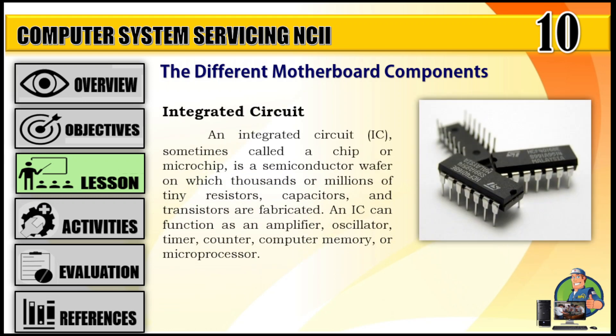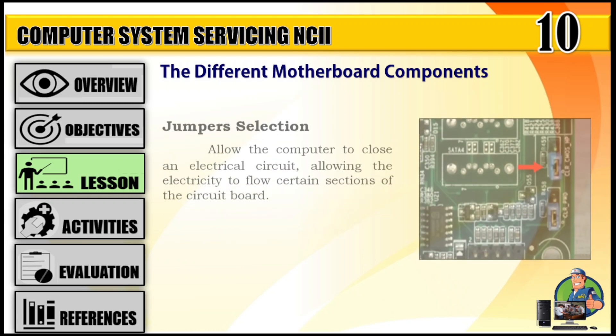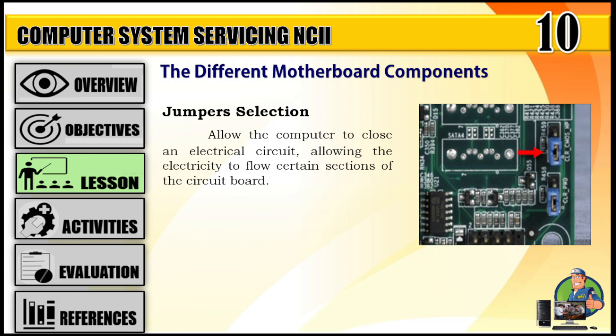Integrated circuit (IC): sometimes called a chip or microchip, is a semiconductor wafer on which thousands or millions of tiny resistors, capacitors, and transistors are fabricated. An IC can function as an amplifier, oscillator, timer, counter, computer memory, or microprocessor. Jumper selection: allows the computer to close an electrical circuit, allowing electricity to flow through certain sections of the circuit board.